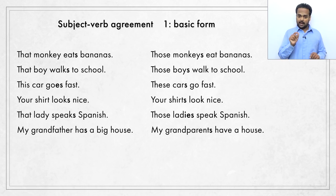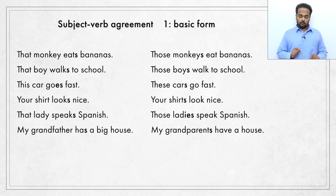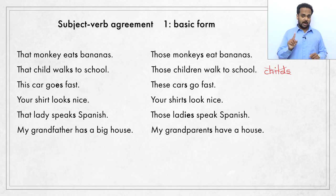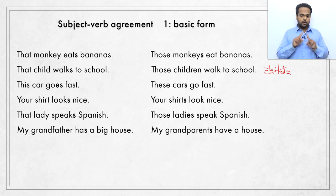Now with plural nouns, I want to point out that there are some irregular plurals. For example, instead of saying 'that boy,' you can say 'that child walks to school.' But now the plural is 'those children walk to school,' not 'childs.' Children is still a plural form, so we use a plural verb — walk — with no S added to the end.